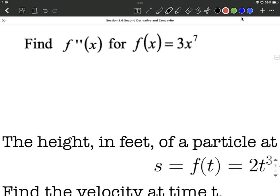So to get the second derivative, the first thing we want to do is find the first derivative. We can simply use the power rule in this case, bring the exponent down, multiply it by the 3, and get 21, reduce the exponent by 1, so 7 minus 1 is going to make 6 for our new exponent.